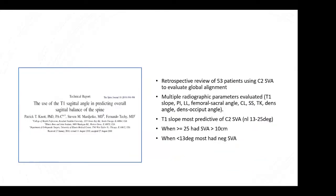A study using the S2 SVA for global alignment did a retrospective review of 53 patients and looked at multiple radiographic parameters including the T1 slope. They found that T1 slope was the most predictive parameter for determining C2 SVA. When patients had a T1 slope greater than 25 degrees, their sagittal vertical axis was generally about 10 centimeters positive, while patients with less than 13 degrees of T1 slope most often had a negative SVA.